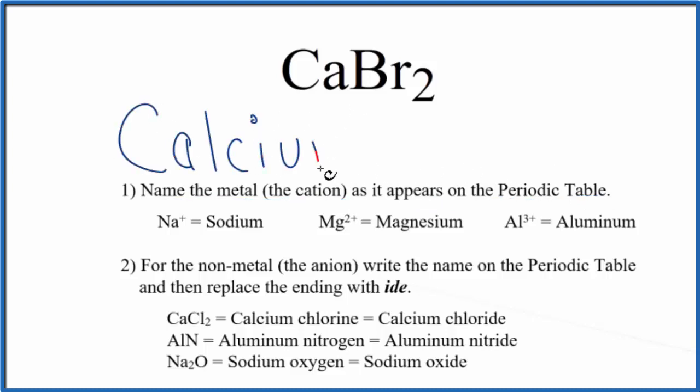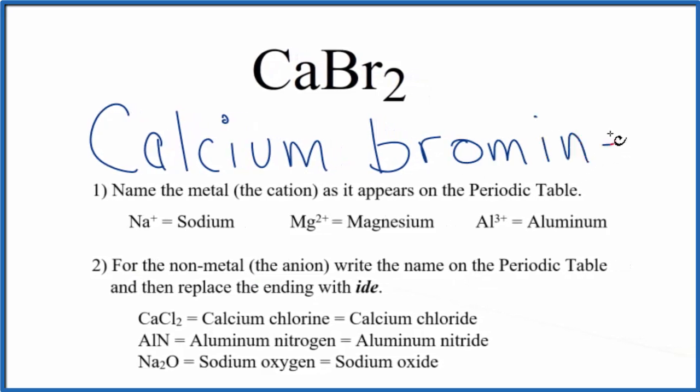And then we'll write the name for the nonmetal as it appears on the periodic table again. We'll start with a lowercase b, and we'll replace the ending with ide. So we'll cross this out and write ide. So the name for CaBr2 is calcium bromide.